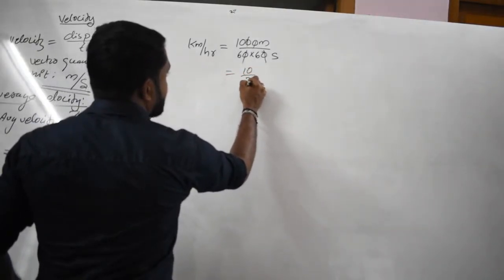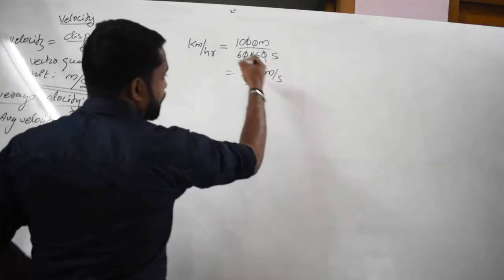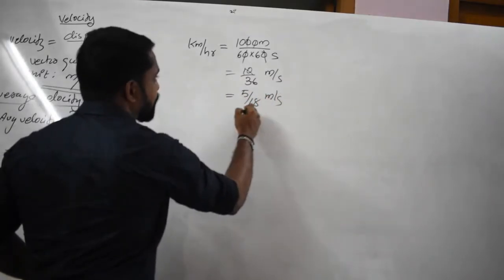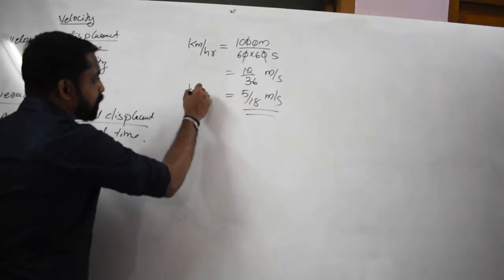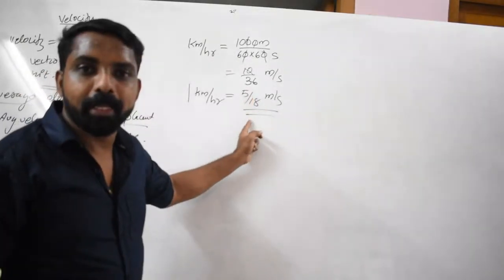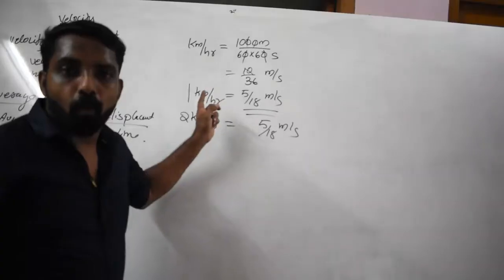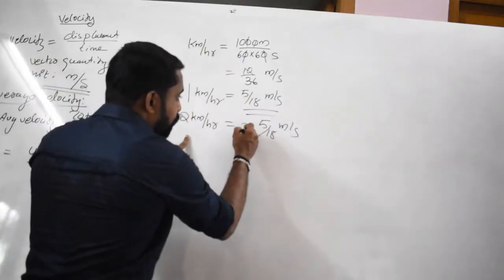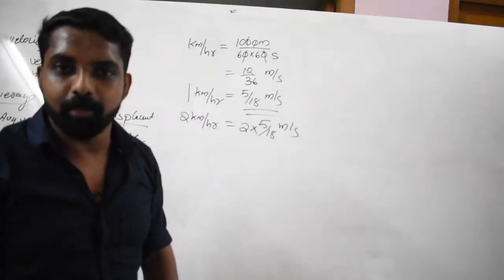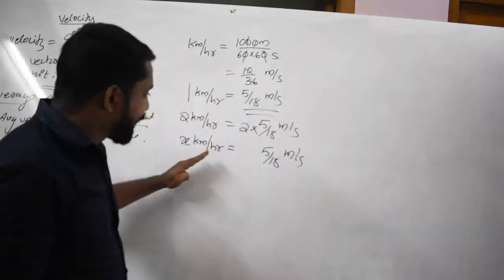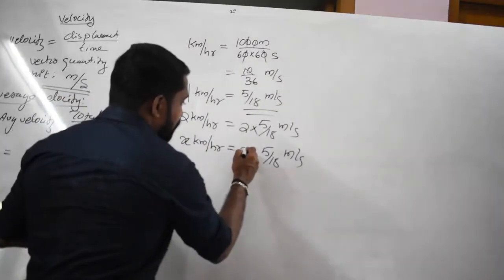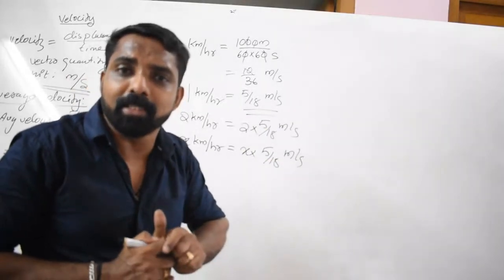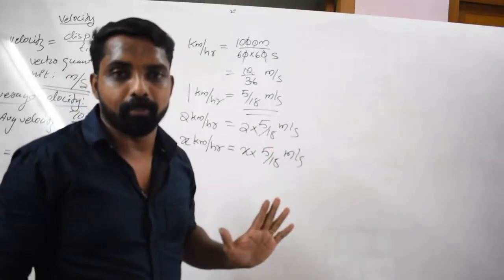Result: 10 by 36, which simplifies to 5 by 18 meter per second. So 1 kilometer per hour equals 5/18 meter per second. For x kilometers per hour, multiply by 5/18 to get meter per second.